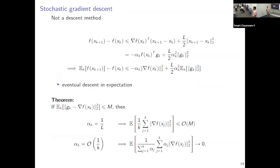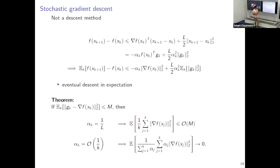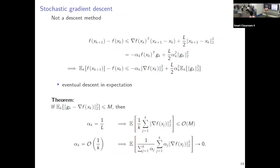This is not necessarily a descent method, but in expectation it is. If we do the same Taylor expansion argument, we have the same equation. But now the gradient estimate G_k is random — given your current iterate, there is noise in obtaining the gradient estimate at the current point. We cannot guarantee descent, but in expectation it is a descent algorithm. Eventually, we'll descend.